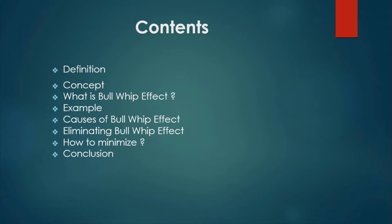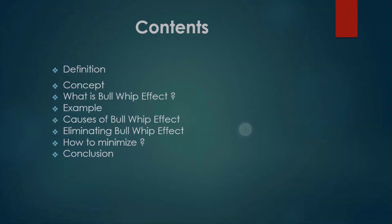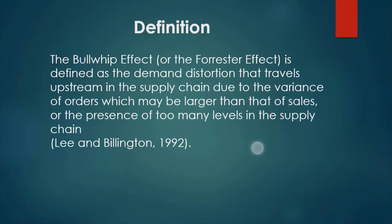Now we will start our presentation one by one. First, we will see the definition of the Bullwhip Effect. The Bullwhip Effect is defined as a demand distortion that travels upstream in the supply chain, due to variance of orders which may be larger than that of sales, or the presence of too many levels in the supply chain. This definition is given by Lee and Pillington in 1992.